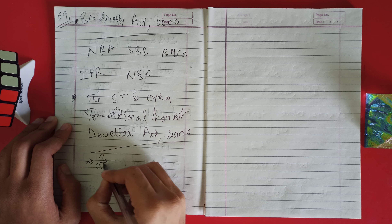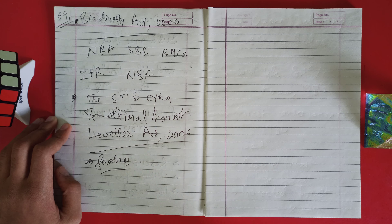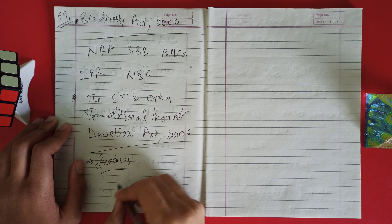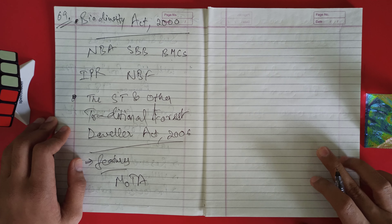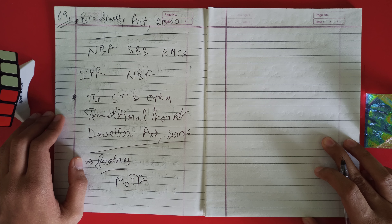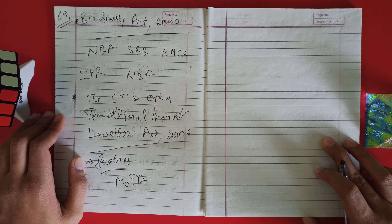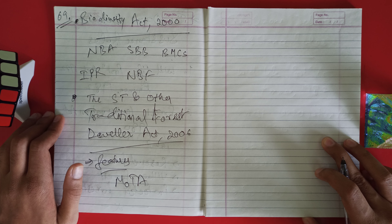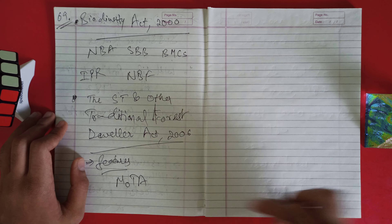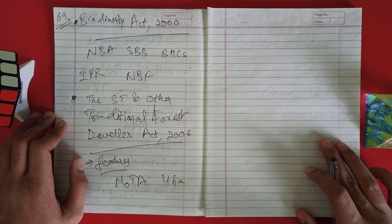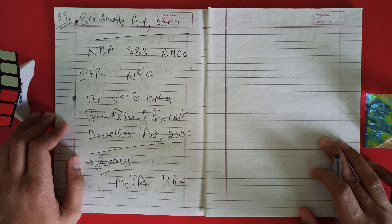Now let me tell you some features. The nodal agency for implementation is the Ministry of Tribal Affairs (MOTA). This act is applicable for tribal and other traditional forest-dwelling communities. The act provides for recognition of forest rights of other traditional forest dwellers, provided they have for at least three generations prior to 13 December 2005 been primarily residing in and dependent on forest for bona fide livelihood needs. The maximum limit for recognizing rights on forest land is 4 hectares. National Parks and Sanctuaries have been included along with Reserve Forest and Protected Forest for the recognition of rights.